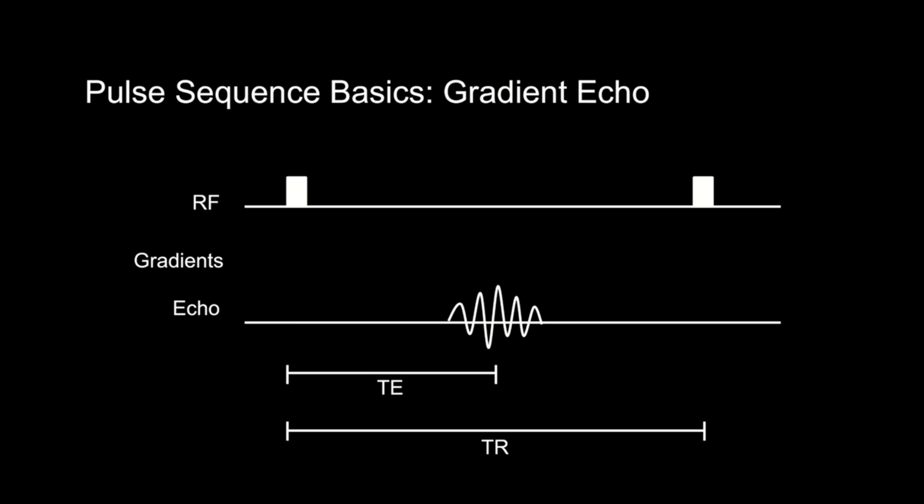These parameters are important and determine tissue contrast — this is a very important point. You can have a gradient echo sequence that is more T1-weighted, T2-weighted, or somewhere in between. The type of pulse sequence doesn't determine the tissue contrast; the pulse sequence parameters — TE and TR — predominantly do.